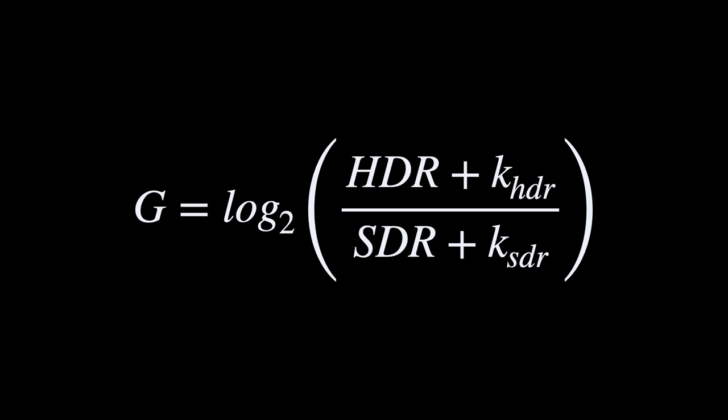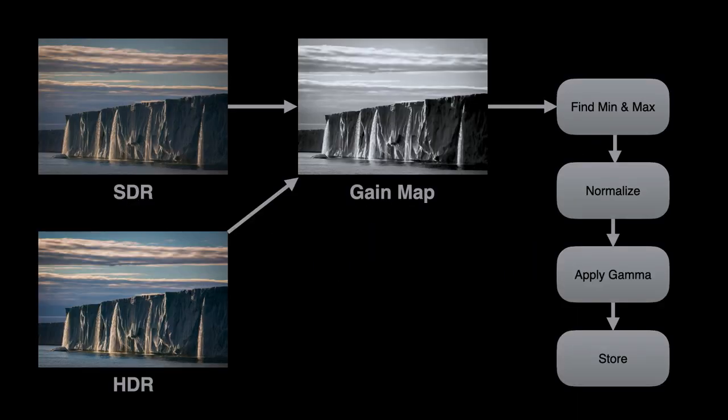If the gain map is one, it means the HDR rendition is one f-stop brighter than the SDR rendition, and so on. From a conceptual point of view, the gain map is a signed floating point image with positive and negative values, where positive means to brighten and negative means to darken.